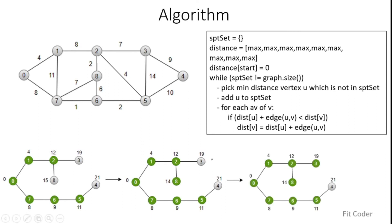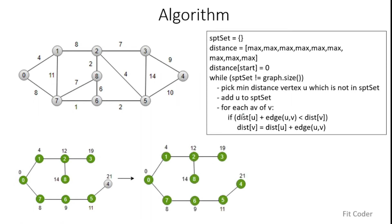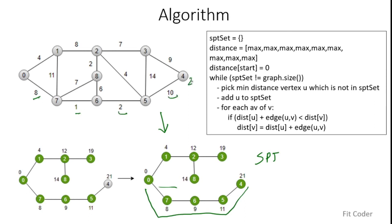Finally, node 4 is included in the SPT set. This is the shortest path tree we get from this graph. If we have to compute the distance from node 0 to node 4, it is 21. The shortest path is 0 to 7, 7 to 6, 6 to 5, and 5 to 4, giving distances 8, 9, 11, and 11 plus 10 equals 21. From node 0 we can reach all other nodes in the graph with the distances assigned. That is how we compute distances using Dijkstra's algorithm.